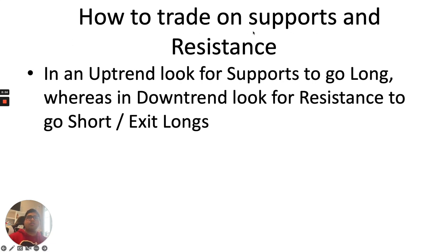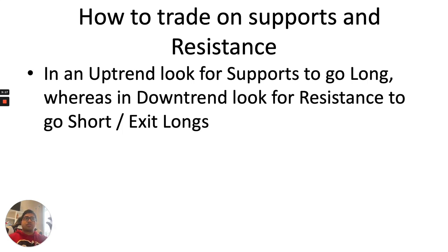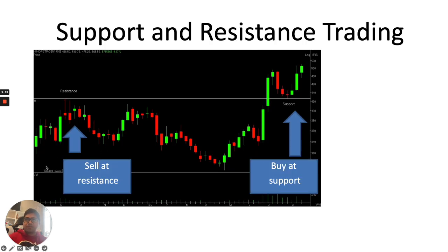How do we trade on support and resistances? In an uptrend, look for supports to go long; in a downtrend, look for resistances to go short. Simple technique — whenever a stock is in an uptrend, look for support to go long on it; and whenever it is in a downtrend, look for resistance to go short on it. Sell at resistance whenever the stock reaches it, buy at support whenever it falls there. Once resistance is broken, it will start acting as a support.